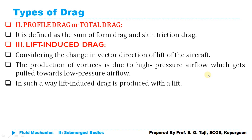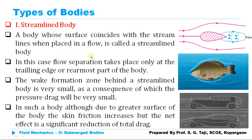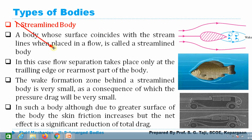We have discussed all aspects of drag and seen that drag provides resistance to the movement of a vehicle or any object through the fluid. To overcome this drag, we generally design the shape of different objects properly to minimize total drag. We are now going to discuss the different types of bodies used to minimize drag.